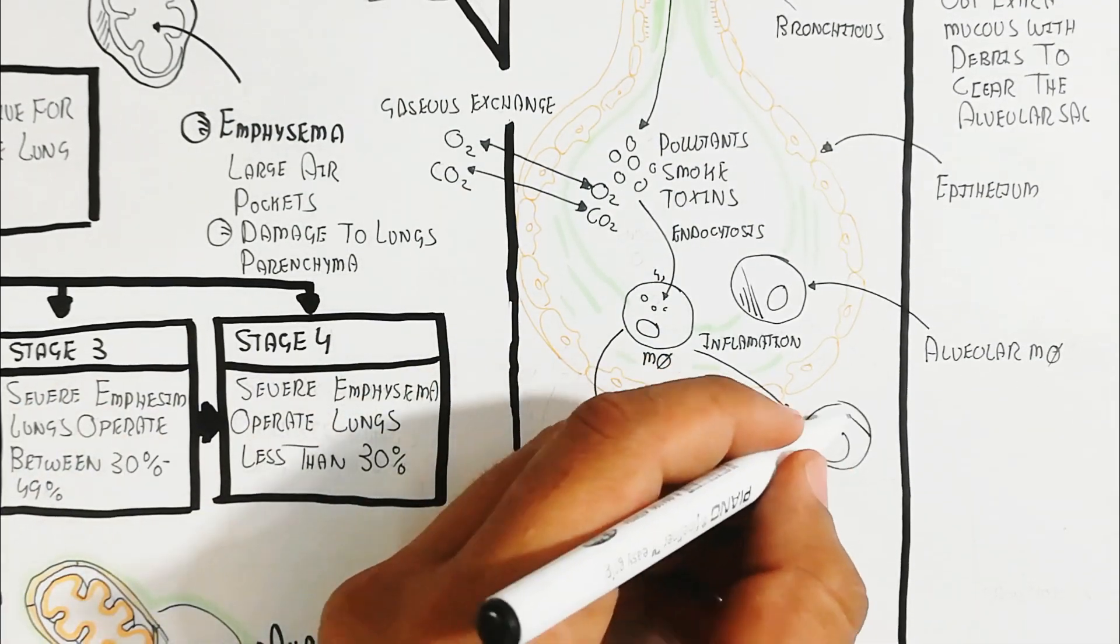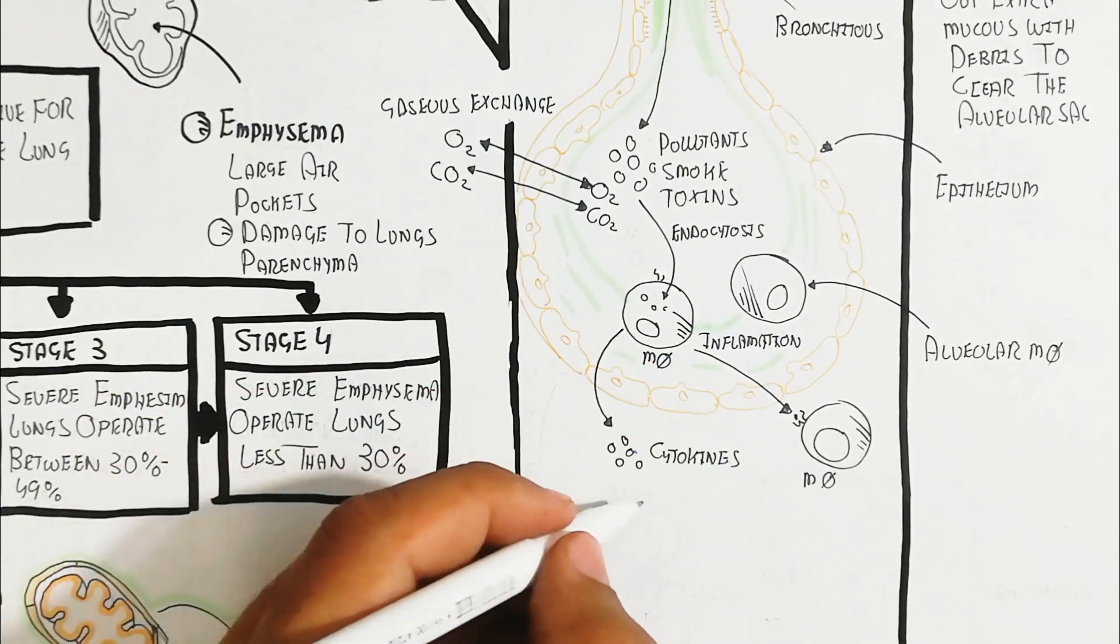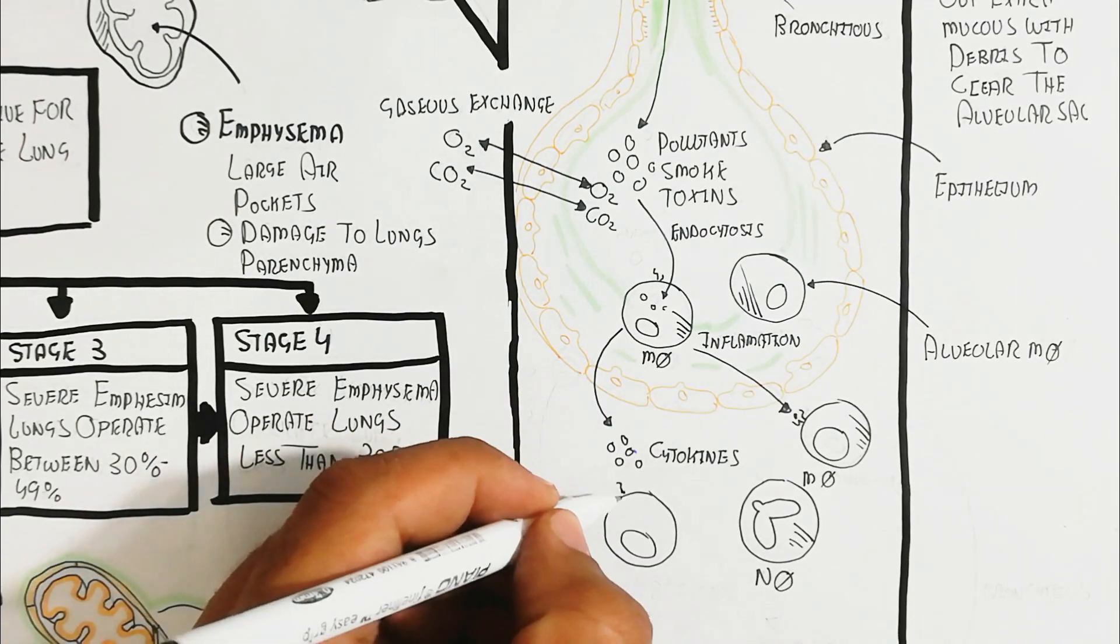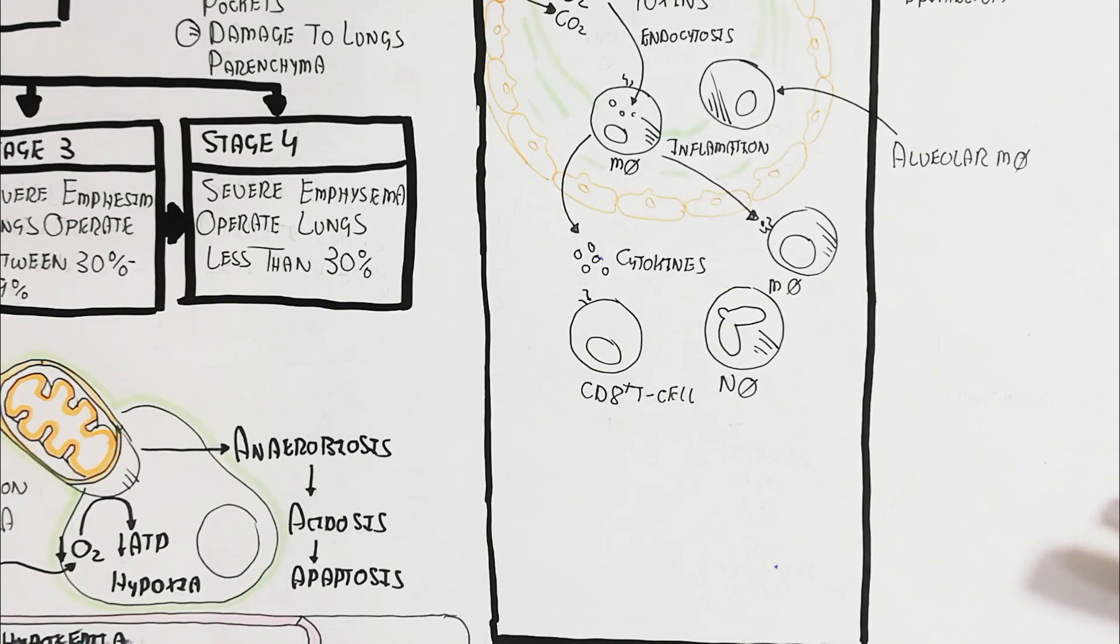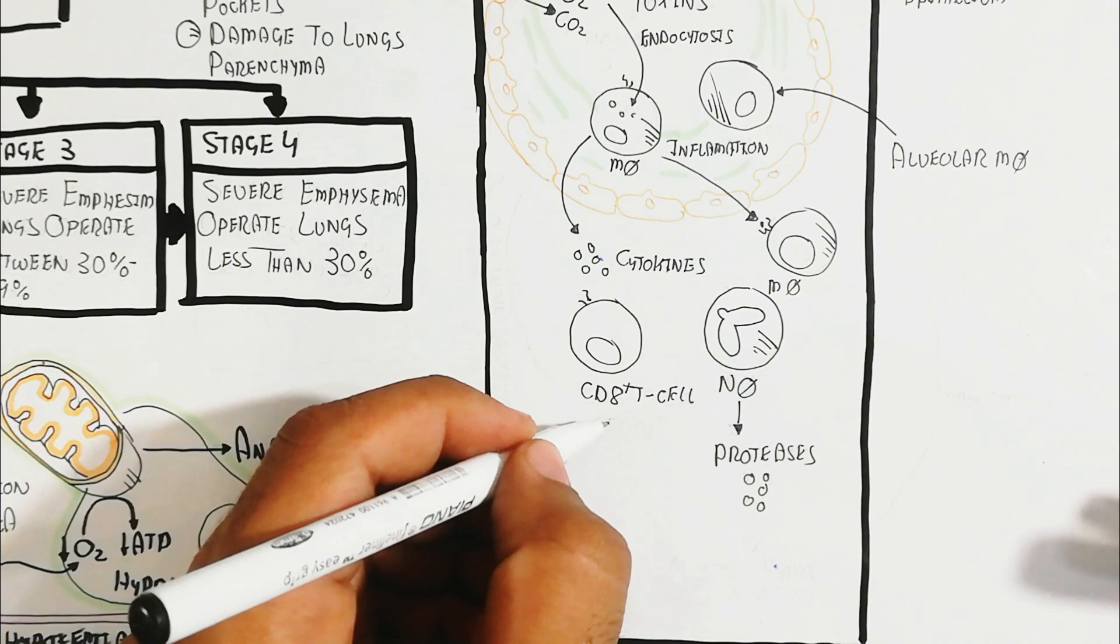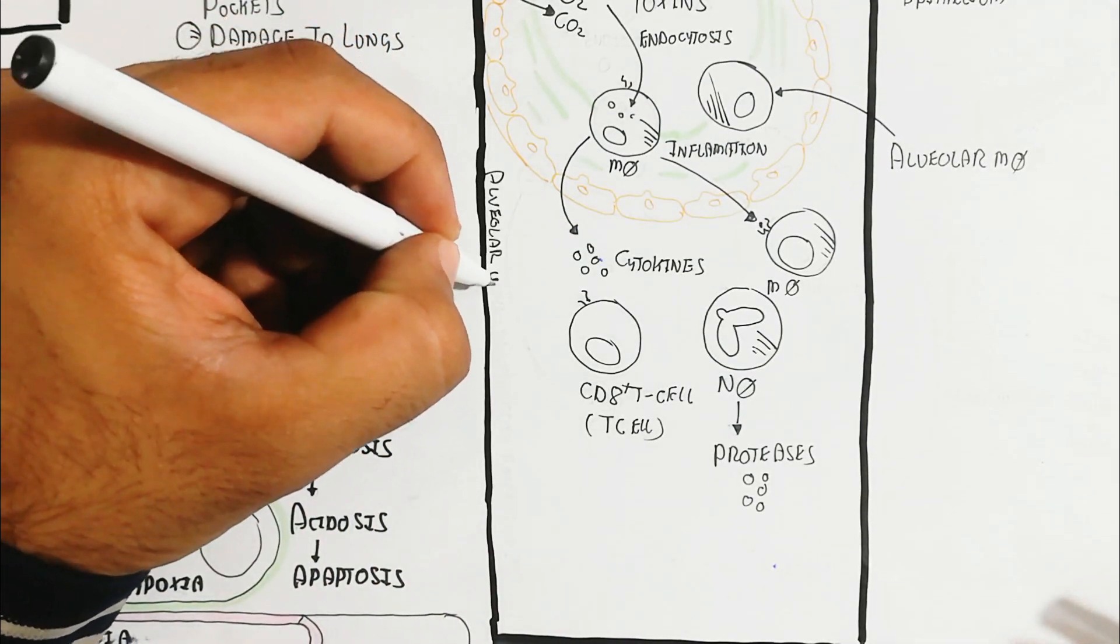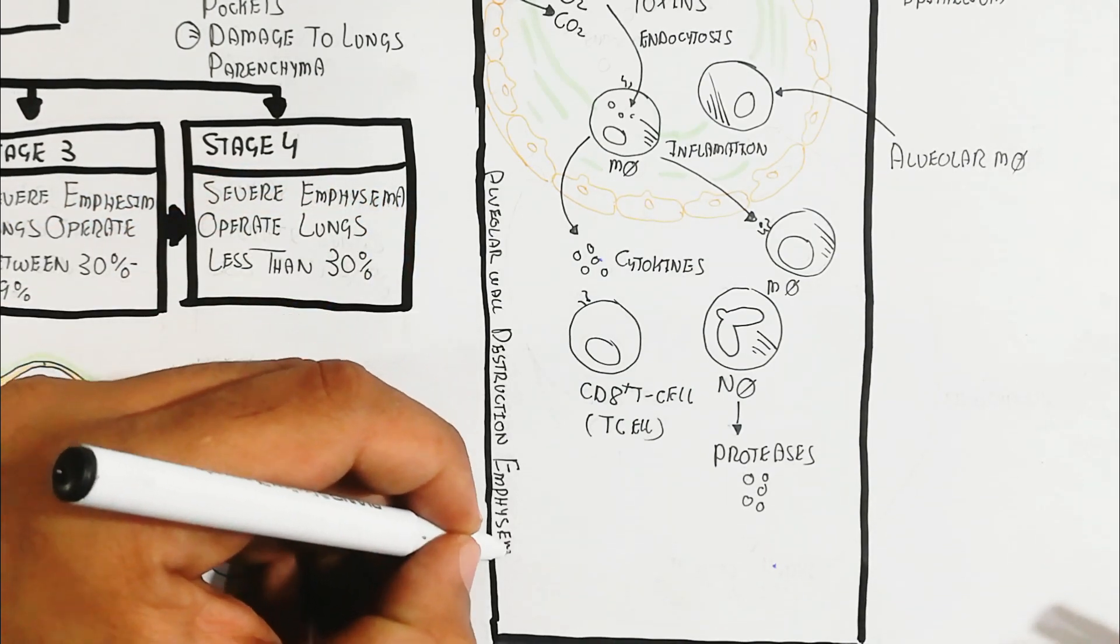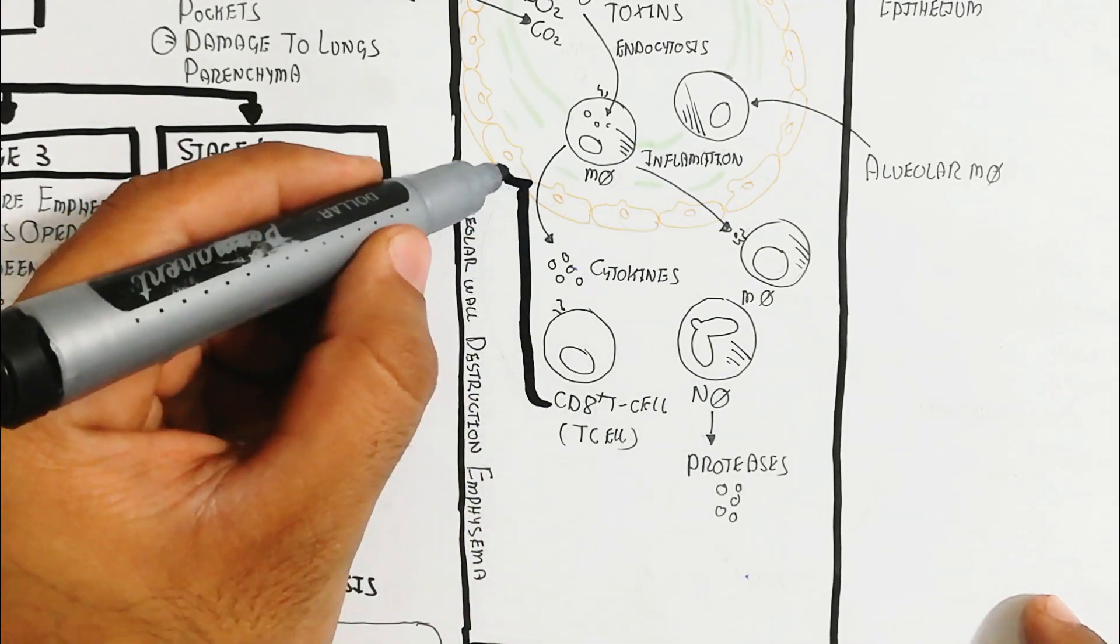After macrophage engulfing, cytokines are produced to recruit monocytes and neutrophils. Neutrophils engulf pollutants through endocytosis. CD8 adaptive immune response causes cytotoxicity, leading to alveolar wall destruction in emphysema through CD8 cytotoxic T cells.